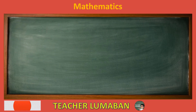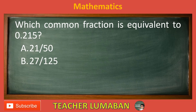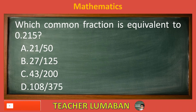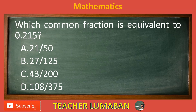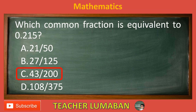Which common fraction is equivalent to 0.215? Letter A: 21/50. Letter B: 27/125. Letter C: 43/200. Letter D: 108/375. Choose the suitable answer based on the given choices in 5 seconds. The correct answer is Letter C: 43/200. The common fraction equivalent to 0.215 is 43/200.